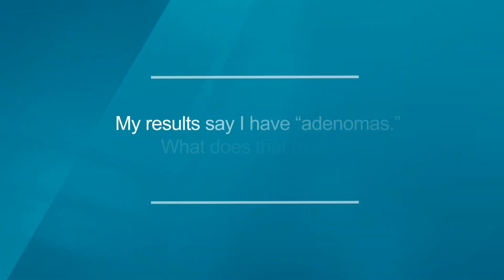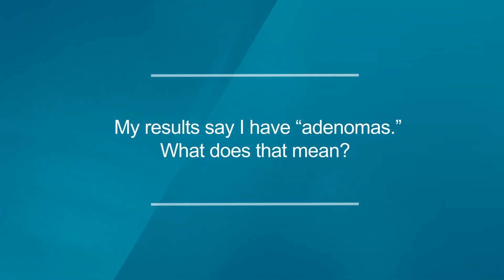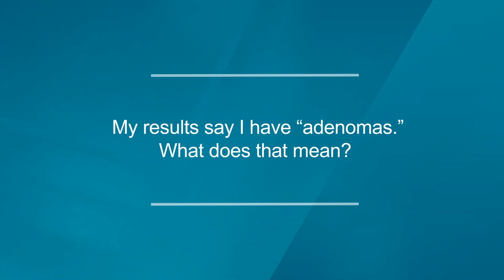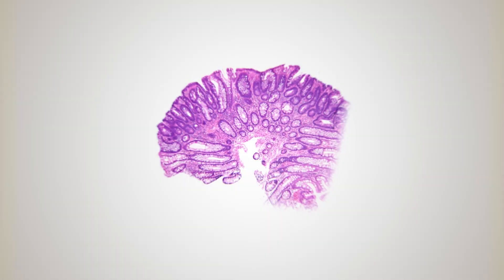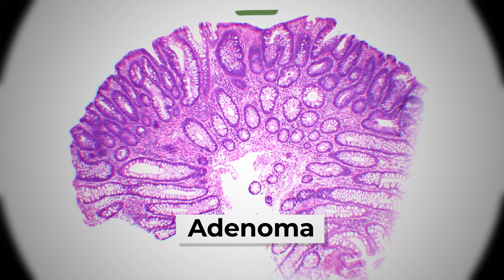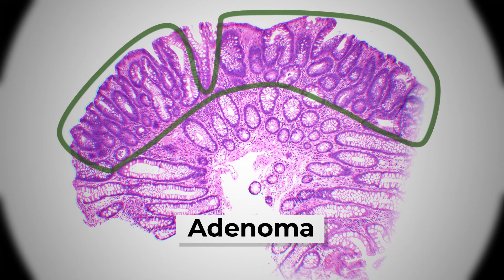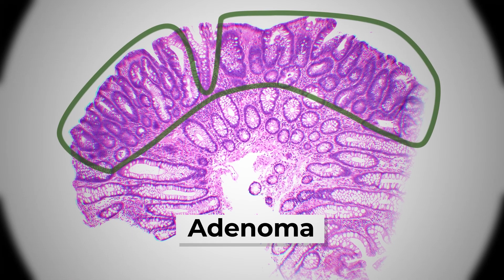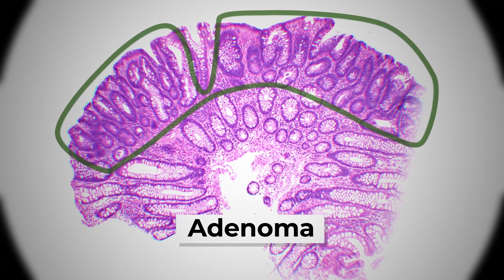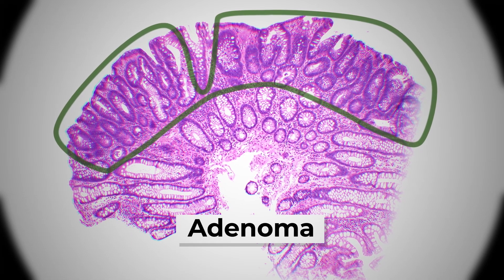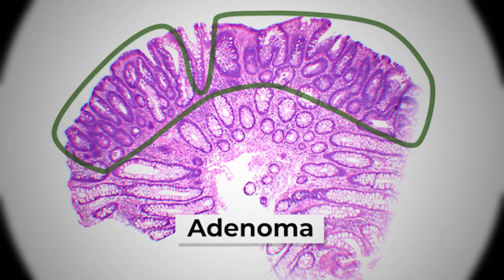Here's a question. Your pathology report said that you had adenomas. That may say tubular adenomas, or it may say tubulovillous adenomas, or just adenomatous mucosa or tissue. An adenoma is a cellular change that has the potential to turn into cancer. And when we talk about that potential, we describe — and you may see this in your report — the word dysplasia.